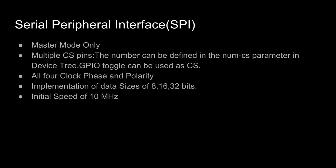Now, the firmware code — these are the SPI and I2C features I would be implementing. For the Serial Peripheral Interface, I would only implement master mode. For multiple chip select pins, the number can be defined in the numcs parameter in the device tree and a GPIO toggle can be used as CS. I will implement all 4 clock phases and polarities, and all data sizes: 8, 16, and 32 bits — essentially the size of the SPI shift register. My aim is to implement initial speeds of up to 10 MHz.